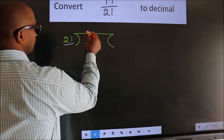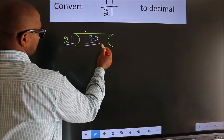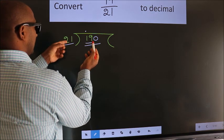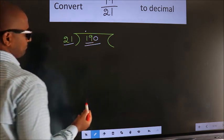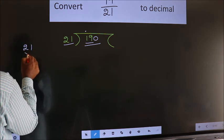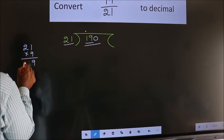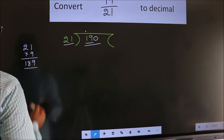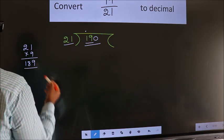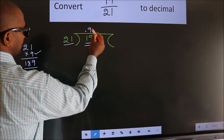We should put a dot here and take 0 here, giving us 190. A number close to 190 in the 21 times table — let us go with 9. So 21 × 9: 9 ones are 9, 9 twos are 18 → 189, which is close to 190. So we go with 9, meaning 21 × 9.